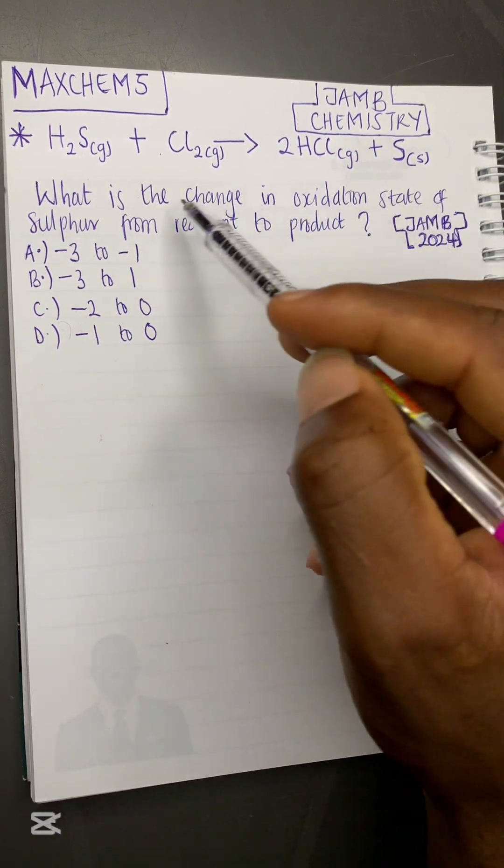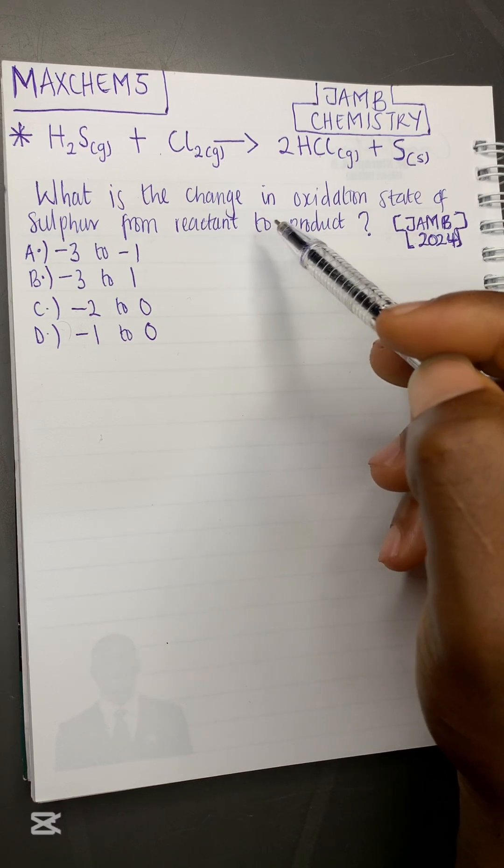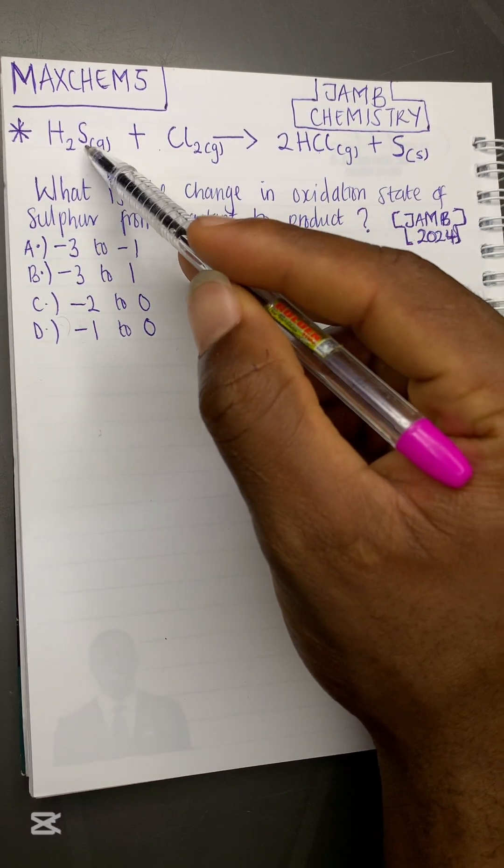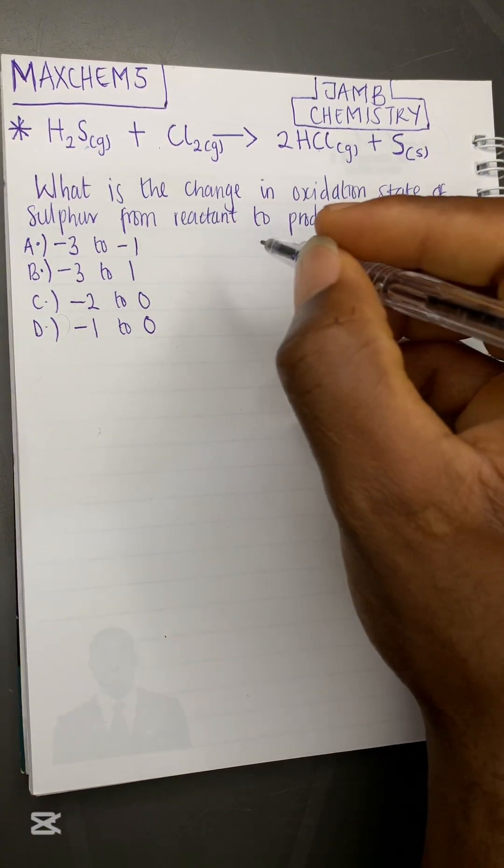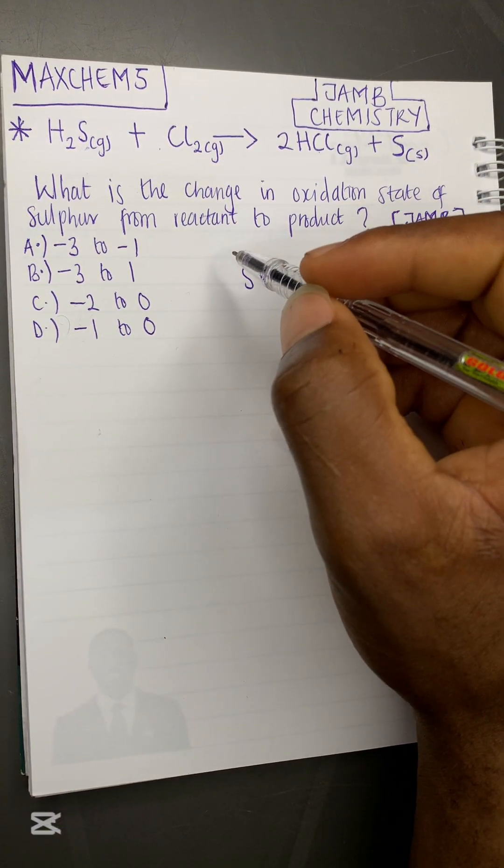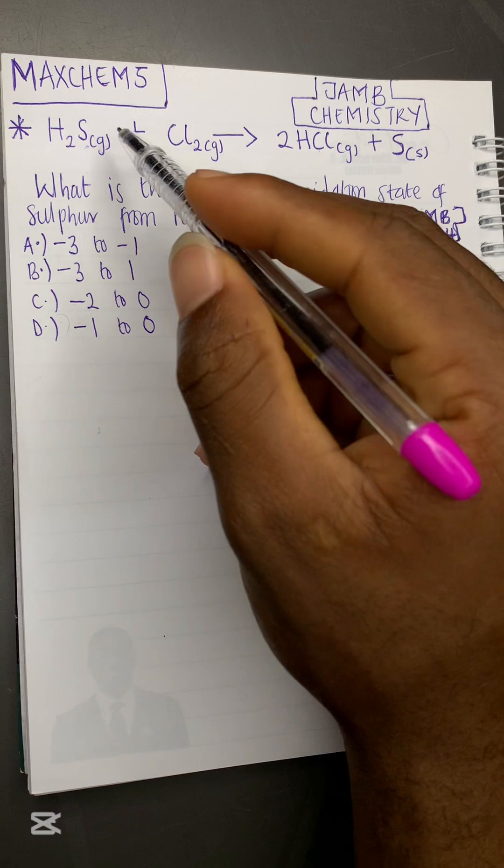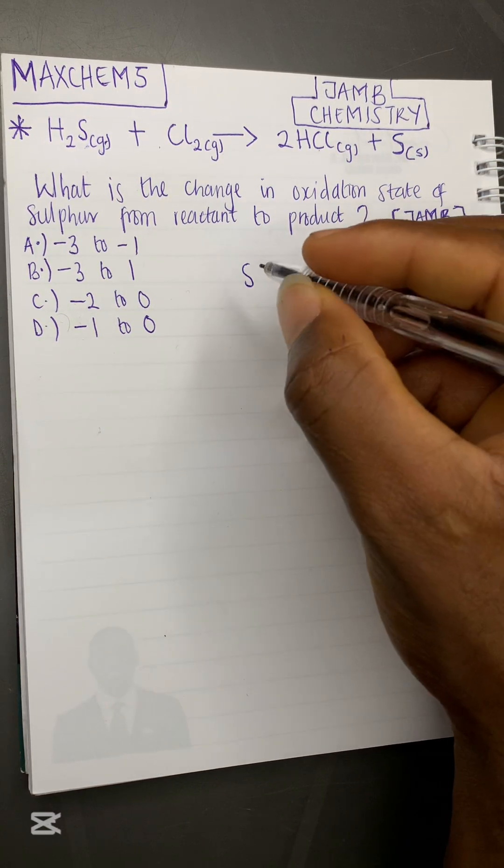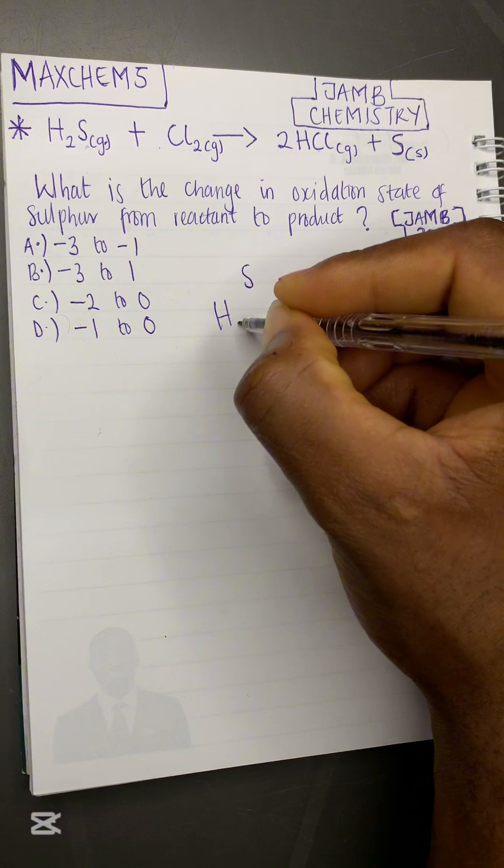You can see the options. Here sulfur, this is sulfur, sulfur is S. Now they are asking us the change in oxidation states of sulfur from the reactant side to the product side.